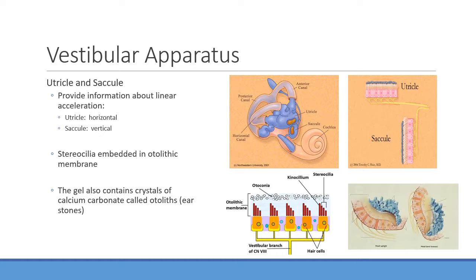The saccule and utricle contain otoliths — calcium-containing crystals that add weight and, through momentum, move in one direction or another. Like the semicircular canals, they have hair cells with a kinocilium; movement in one direction opens or closes potassium channels, sending signals via cranial nerve eight. The saccule detects vertical linear acceleration — for example, moving up in an elevator — while the utricle detects horizontal linear acceleration. These structures respond to linear accelerations, not rotational movement.